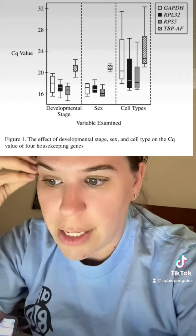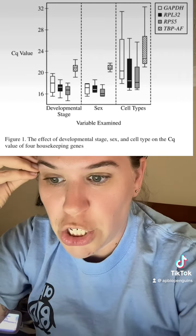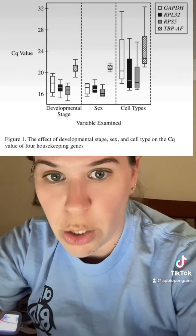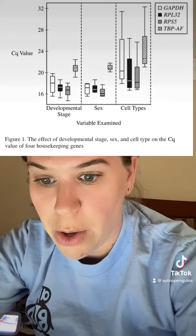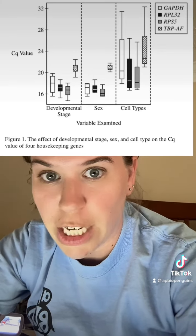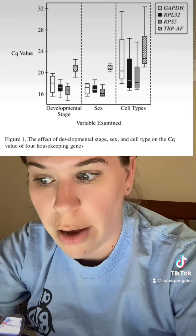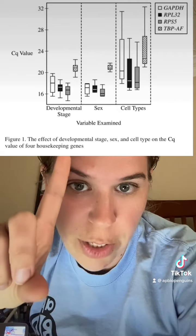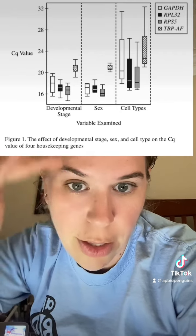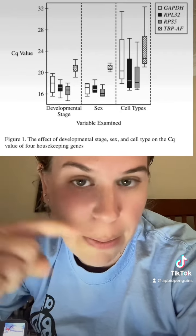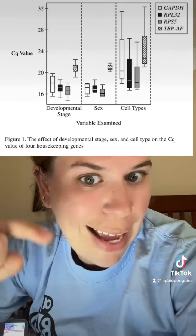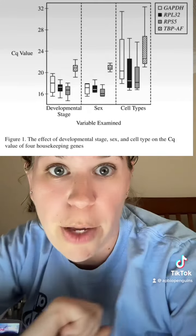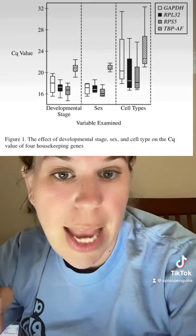The question asks us to identify the gene that has the lowest median CQ value when the bees of different developmental stages were compared. If you look at the developmental stage, the one that has the lowest median line — the line in the middle of the rectangle — that would be RPS5.